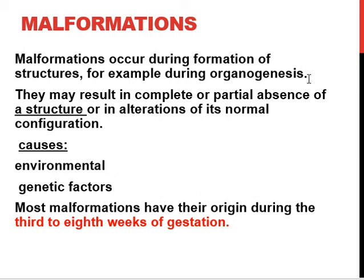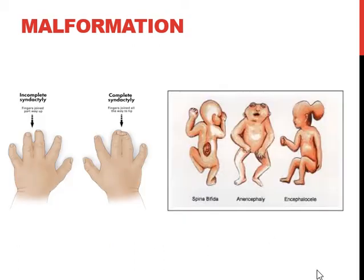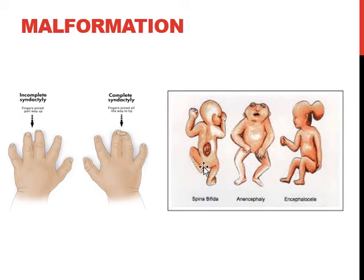Although malformations occur during organogenesis, most have their origin during embryogenesis, that is 3 to 8 weeks of gestation. Examples of malformations include partially joined fingers (incomplete syndactyly) and complete syndactyly, spina bifida, and anencephaly. These malformations are produced during organogenesis, but their origin is definitively during the embryogenic period.